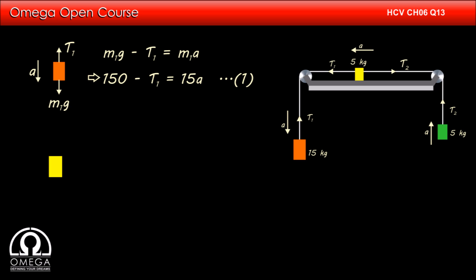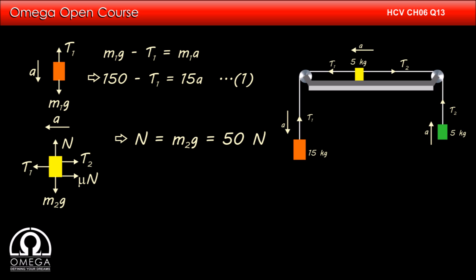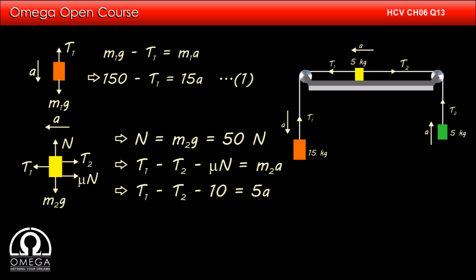Now let us draw the free body diagram of the 5 kg block on the table. If we denote its mass with m2, then gravitational force m2g is pulling it downward. Normal reaction from the table N is pushing it upward. Tension T1 is pulling it towards left and tension T2 is pulling it towards right. Friction force of magnitude mu times normal is acting towards right, and the block is moving with acceleration a towards left. Since the block is not moving vertically, N equals m2g, i.e., 50 N. Writing the equation of motion in the horizontal direction, we get T1 minus T2 minus mu·N equals m2a. Putting the values, we get T1 minus T2 minus 10 equals 5a.